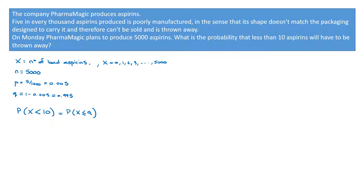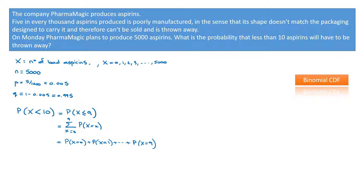Using the cumulative distribution formula, this equals the sum from x equals 0 up to 9 of P(X = x), which equals P(X = 0) plus P(X = 1) plus ... plus P(X = 9) — that's 10 probabilities to calculate. We could do that by hand, but it would take a very long time. The key thing to learn is that our graphical display calculators have a built-in function called the binomial CDF.